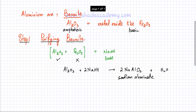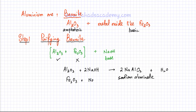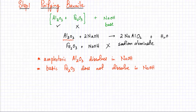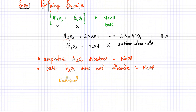Fe2O3, being basic, has no reaction with NaOH. So in the first step, you mix bauxite with NaOH: Al2O3 dissolves in NaOH but Fe2O3 does not dissolve. Since the amphoteric Al2O3 dissolves and the basic Fe2O3 does not, the undissolved Fe2O3 is simply filtered out. That is how you get rid of Fe2O3 from bauxite.